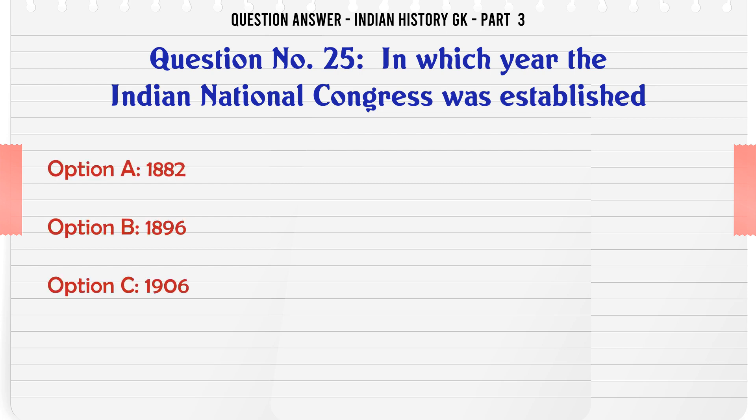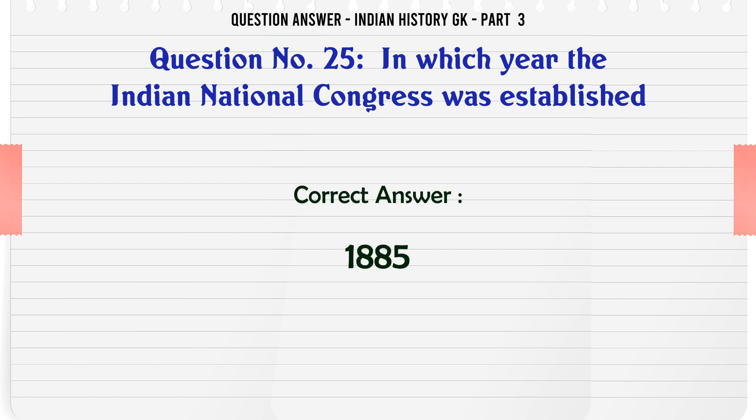In which year was the Indian National Congress established? A. 1882, B. 1896, C. 1906, D. 1885. The correct answer is 1885.